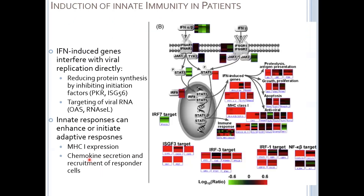Starting with innate immunity, studies in patients and non-human primate models show that early after infection, there's a rapid rise in type 1 interferon-induced genes. These can interfere directly with HCV replication — reducing protein synthesis by inhibiting initiation factors in viral synthesis, and directly targeting the viral RNA. RNases seek out cytoplasmic RNA of certain structures via pattern recognition and degrade the viral RNA. MHC class I is also upregulated to recruit CD8 T-cells. These early responses are really critical for setting up the eventual adaptive response.